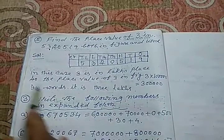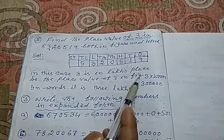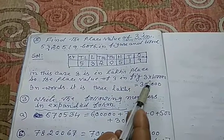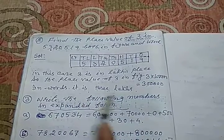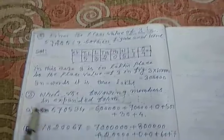In this case, 3 is in lakhs place. So the place value of 3 in the figure equal to 3 into 1 lakh, that is 3 lakhs. In words, it is 3 lakhs.